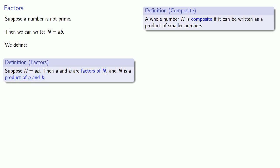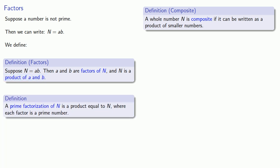And this leads us to an important idea. A prime factorization of a number N is a product equal to N, where each factor is a prime number. Now, if I want to write a number as a product of primes, I have to know what the prime numbers are. And we've already determined that 5 is a prime number, but what about others?